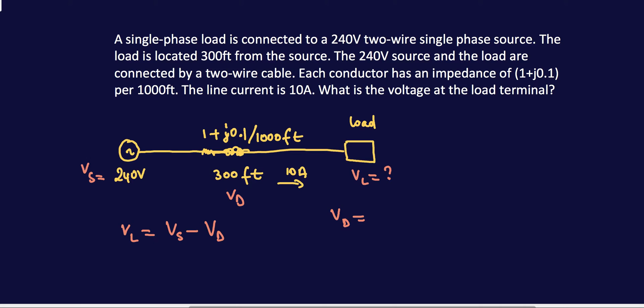So we have a current here of 10 amps, and we have an impedance, but the impedance is given per thousand feet and we have a length of 300 feet. So it'll be (1+j0.1)/1000 feet times 300.